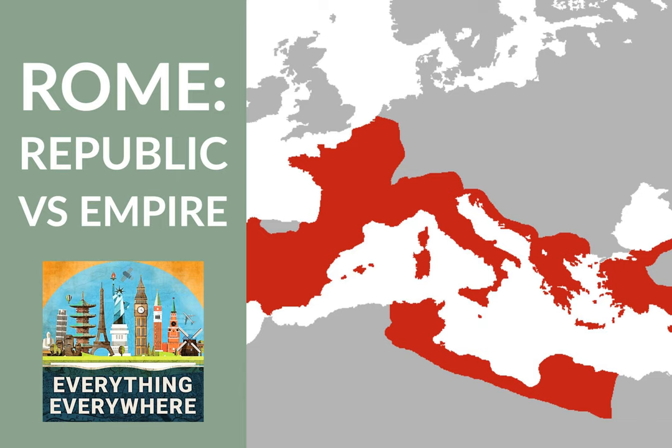I've done several episodes pertaining to ancient Rome. The reason is that so many of the foundational things in our world, from our alphabet, to our calendar, to the names of our months, can all be traced back to Rome. During those episodes, I've often talked about the Roman Republic and the Roman Empire. However, many people may not realize what the difference is between the two. When did the Republic become an empire, and why? Learn more about the Roman Empire versus the Roman Republic on this episode of Everything Everywhere Daily.